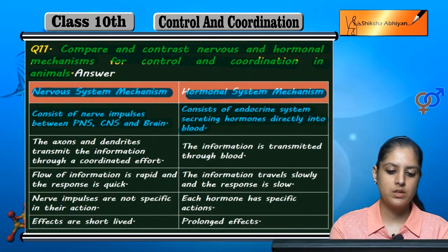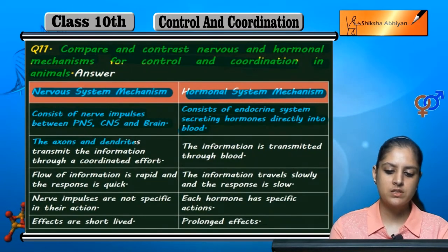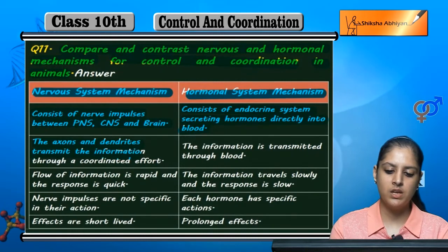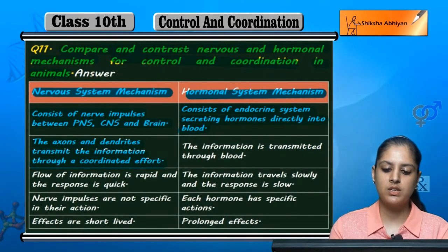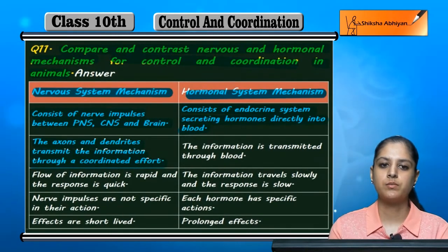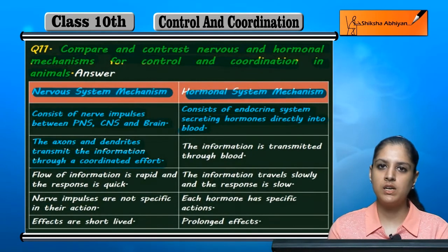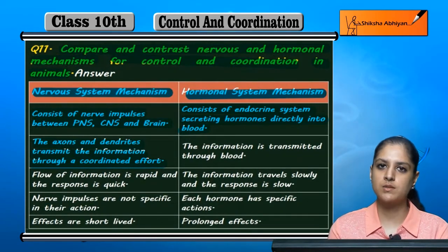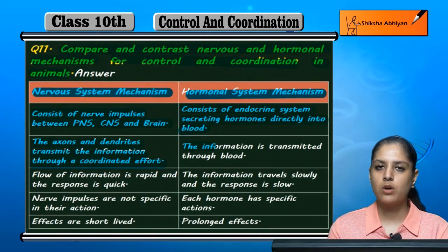In the nervous system, axons and dendrites transmit information through a coordinated effort.